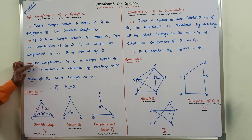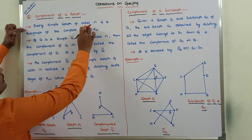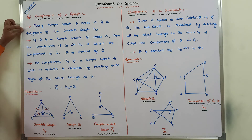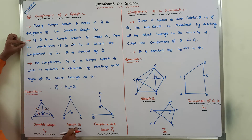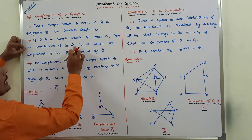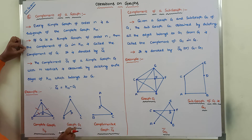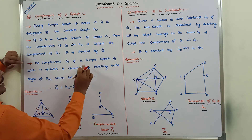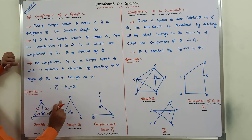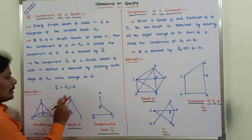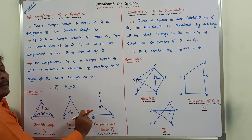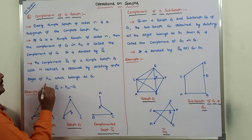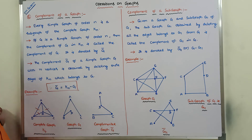Every simple graph of order N is a subgraph of the complete graph Kn. If G is a simple graph of order N — where N is the number of vertices, that is 4 — then the complement of G in Kn, denoted G-bar, is obtained by deleting those edges of Kn which belong to G.